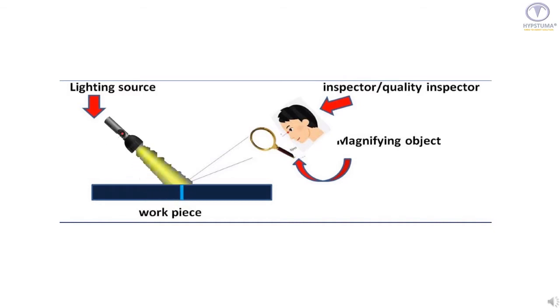In this slide you can see the process by which visual inspection is being done. It is done by visualizing the metal plate through naked eyes, using a magnifying glass, in presence of a light source.